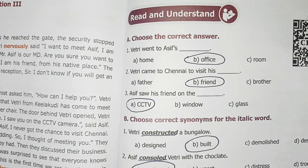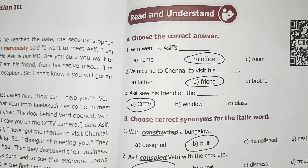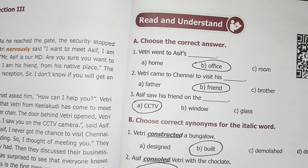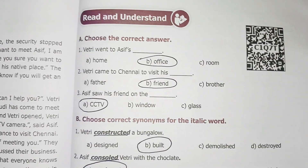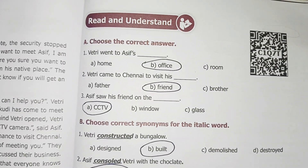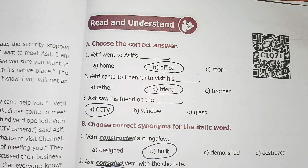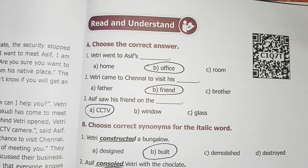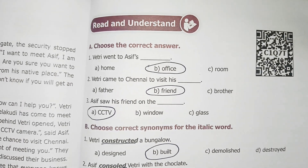Now, read and understand. Choose the correct answer. First one: Vetri went to Asif's office. Answer is Office. Second one: Vetri came to Chennai to visit his friend. Third one: Asif saw his friend on the CCTV.